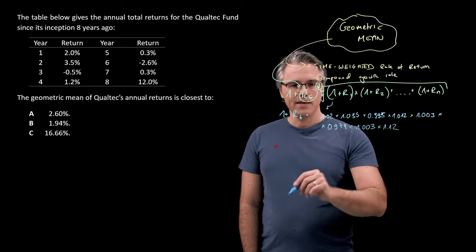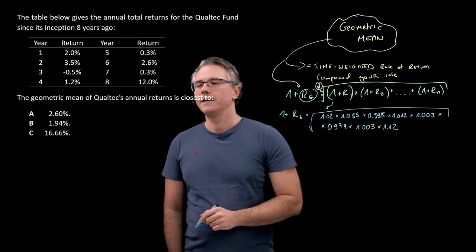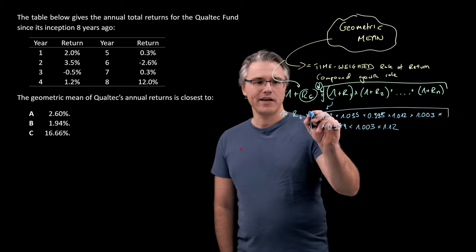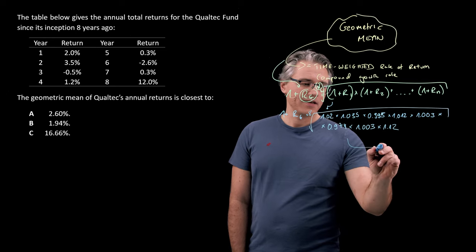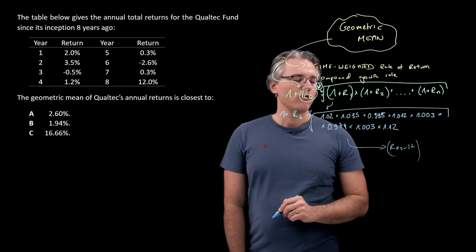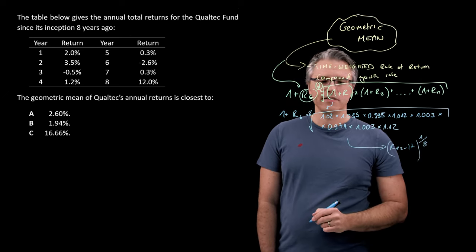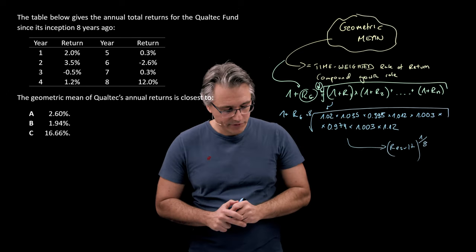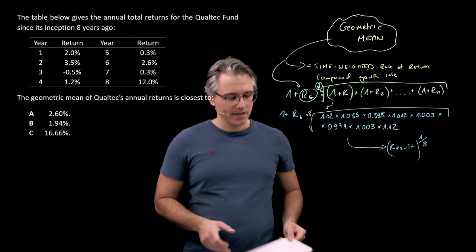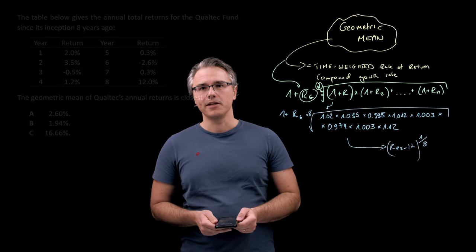We're supposed to do all this and take the relevant root, and that's going to be the root of 8. But this is the same as saying whatever is the result here, we raise it to a power of 1 over 8. And obviously we deduct 1 to get the relevant result, just the R. So let's do this on the calculator.